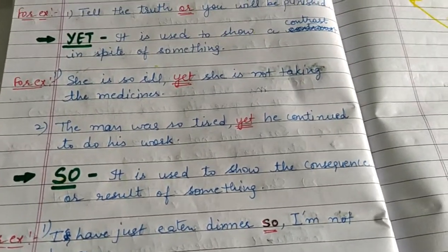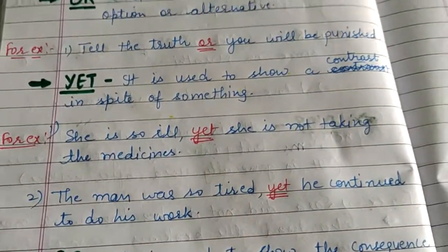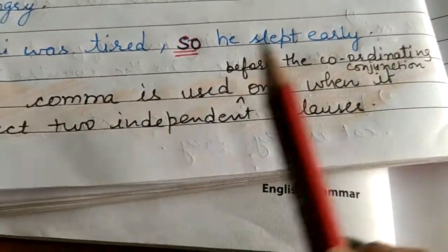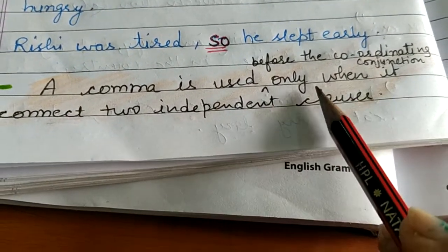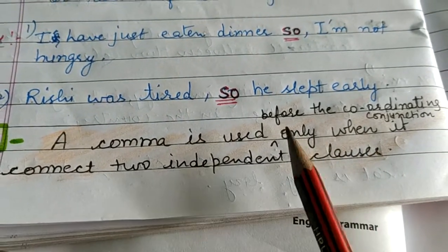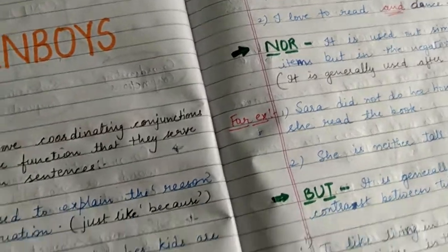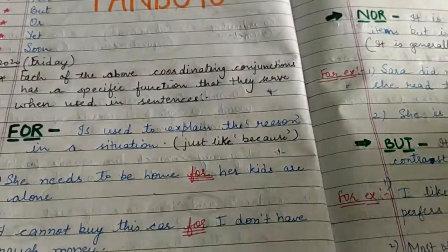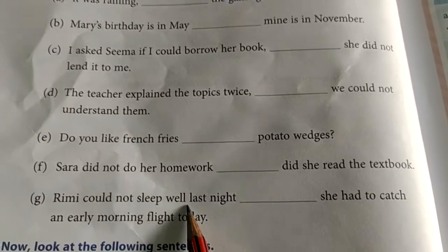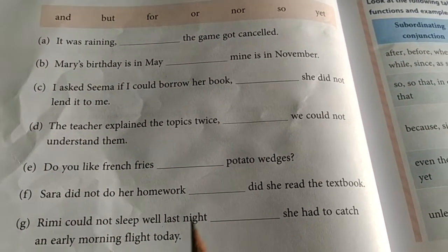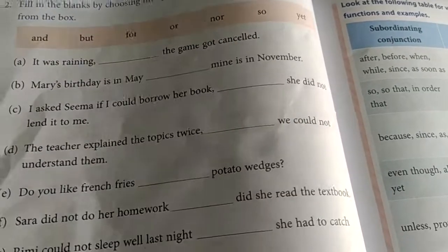I hope all of you have understood all these conjunctions. Just keep one thing in mind — you have seen commas in so many conjunctions. Where do we use these commas? We use commas before the coordinating conjunction only when it connects two independent clauses. Jab coordinating conjunction do independent clauses ko connect kare, only then we use a comma before it. I hope all of you have understood all kinds of coordinating conjunctions. If you have any problem, you can ask me. I will be sending the answers in the WhatsApp group and giving one more exercise to be done in the notebook. Thank you so much.